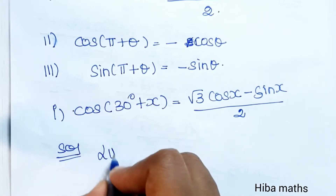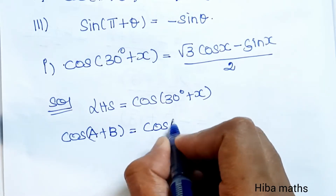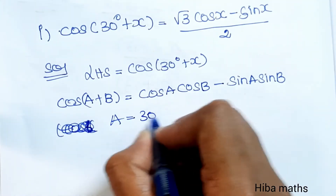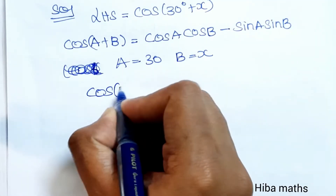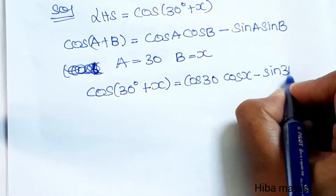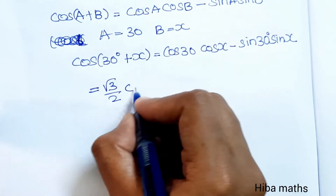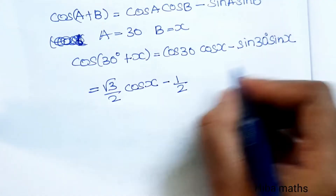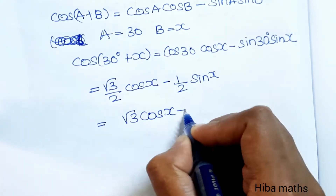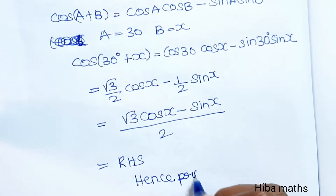Solution: LHS is cos(30° + x). This is in the format cos(a + b), where a = 30° and b = x. Applying the formula cos(a + b) = cos a cos b − sin a sin b, we get cos(30°)cos x − sin(30°)sin x. Substituting cos 30° = √3/2 and sin 30° = 1/2, we get (√3 cos x − sin x) / 2, which equals RHS.